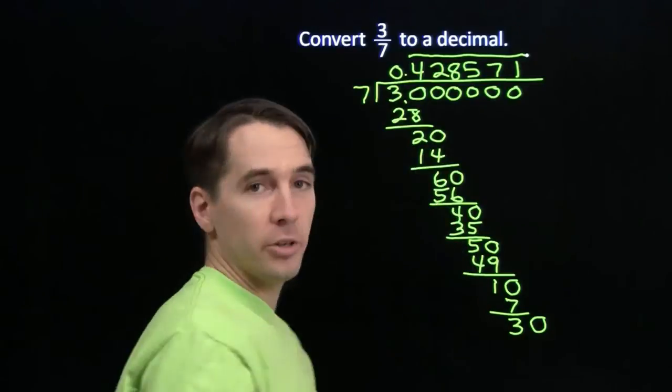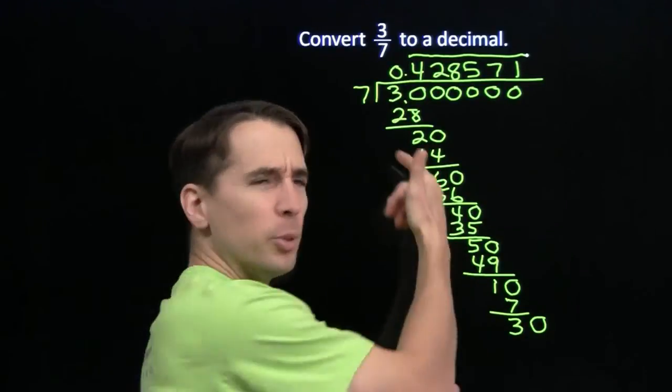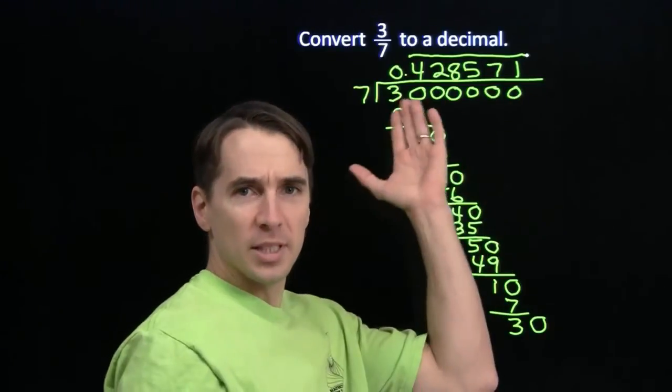Now on your own, check out the other 7ths. Try 1/7, 2/7, 4/7, 5/7, 6/7. You should see a pretty cool pattern in what happens in these digits.